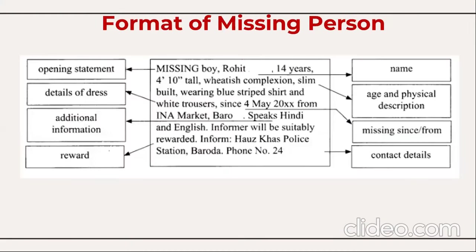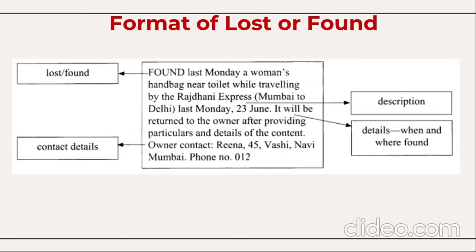For the missing person format, mention 'Missing Boy' or 'Missing Girl,' the name, age, physical description — height, complexion, build, clothing — and when and where they were last seen. For example: 'Missing Boy — 4'10", fair complexion, slim built, wearing blue striped shirt and white trousers since 4th May. Speaks English and Hindi. Informer will be suitably rewarded. Inform [house/police station, Baroda].' For lost and found: 'Found last Monday — a woman's handbag near the toilet while traveling by Rajdhani Express, Mumbai to Delhi, 23rd June. Will be returned to owner after providing particulars — contact [name and details].'